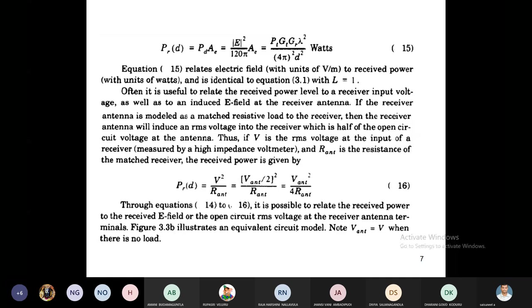Here the V is nothing but RMS voltage. You know the Vant value. Then how to calculate Vrms, which is equal to Vant/2. That's why (Vant/2)² divided by Rant, which is equal to Vant² divided by 4Rant. This is another way to calculate received power.